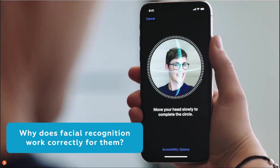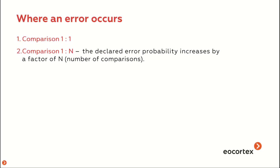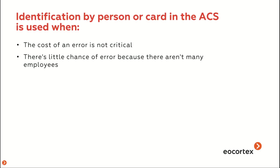You may wonder why face recognition on a smartphone works perfectly without strict technical requirements. When using facial recognition on a smartphone or ATM, comparison is made with just one face. In access control system identification tasks, comparison is made with all persons in the database. The larger the database, the higher the probability of error, especially when installation requirements are not followed.